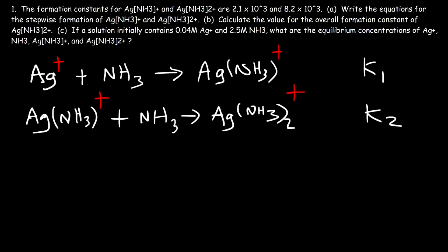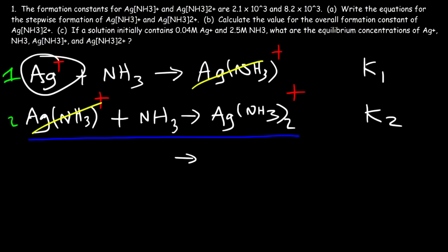Calculate the value for the overall formation constant of this ion. What we need to do is add these two equations — let's call them equation 1 and 2. When adding these two equations, the intermediate will cancel. On the left side we have the silver cation. Everything is in an aqueous phase, and these reactions are reversible, so we do need a double arrow.